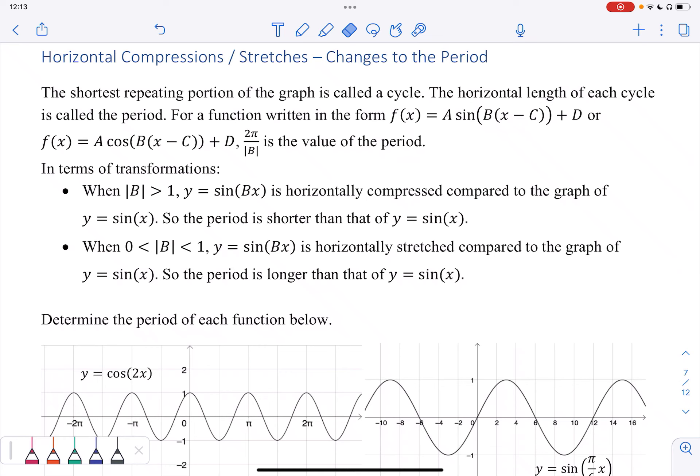Horizontal compressions and stretches, changes to the period. We know that the shortest repeating portion of the graph is called a cycle, and the length of that cycle is the period. So for a function written in this form, where again we have every possible transformation, we can see that B is going to correspond to the value of the period, so the length of that cycle.